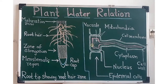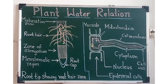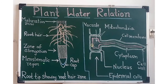This is the diagram of a typical root showing four regions. The first region is called the meristematic region. The second region is called the zone of elongation. The third region is called the region of root hair, and the last region is called the region of maturation.